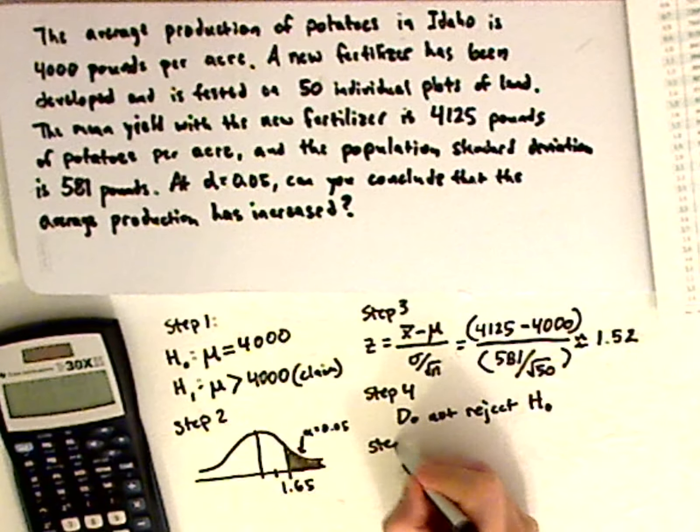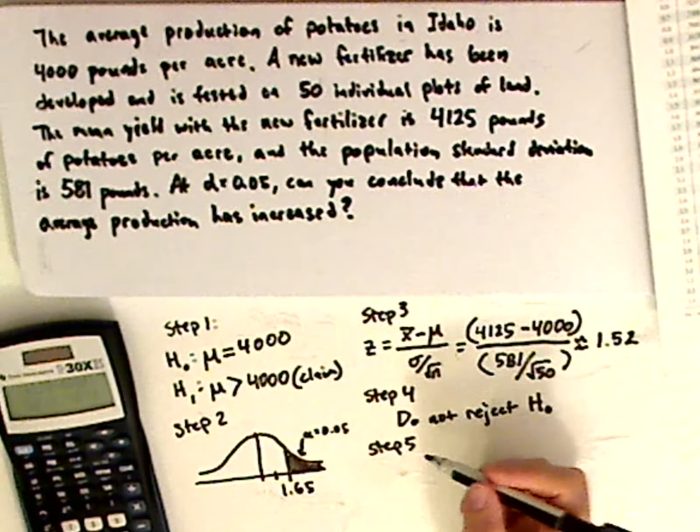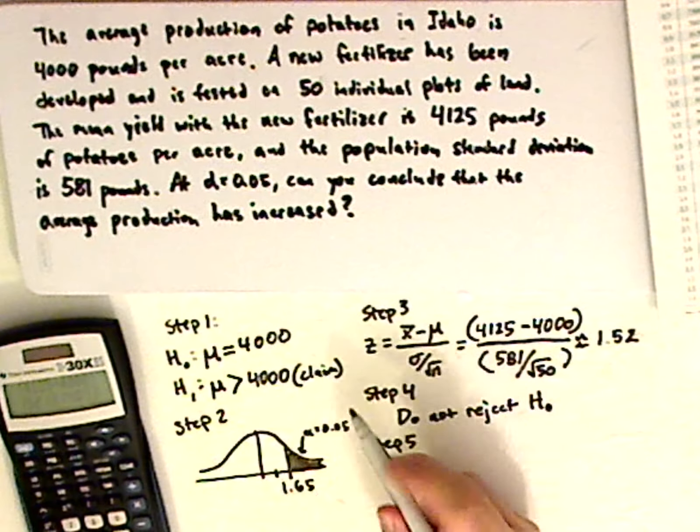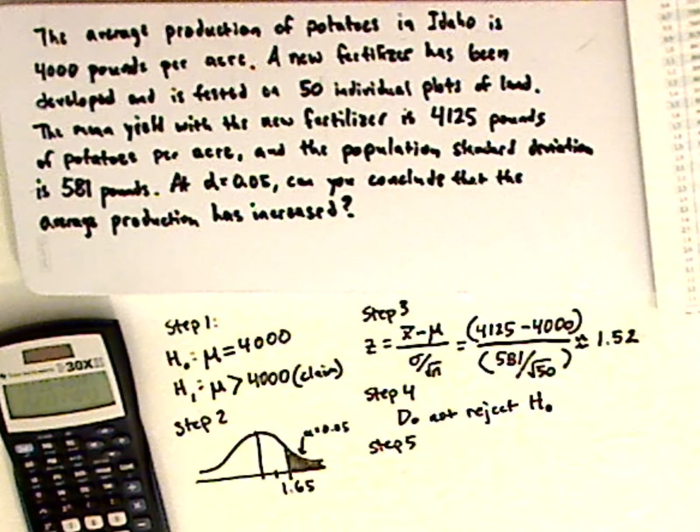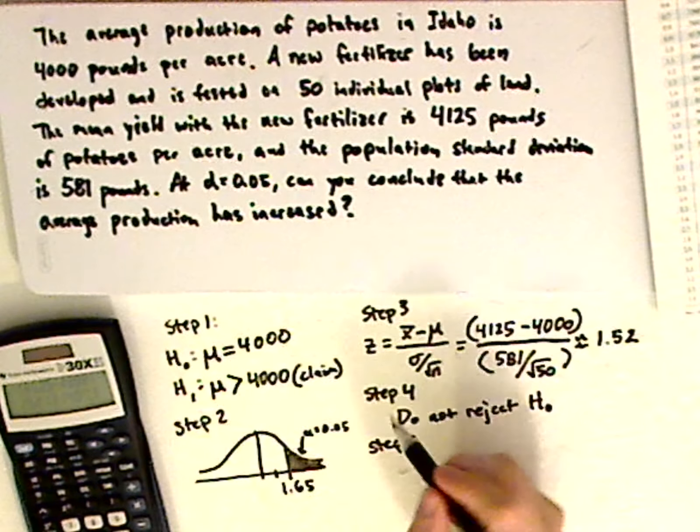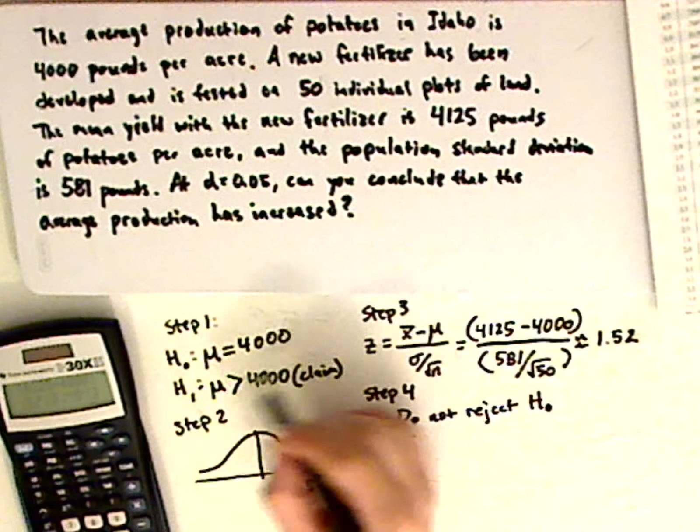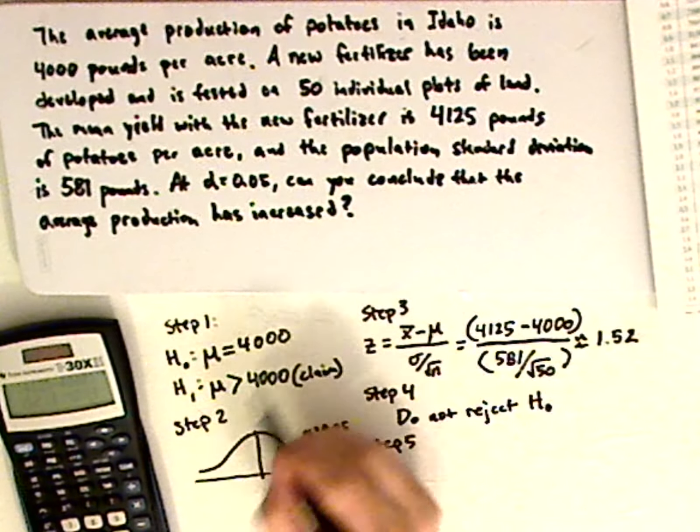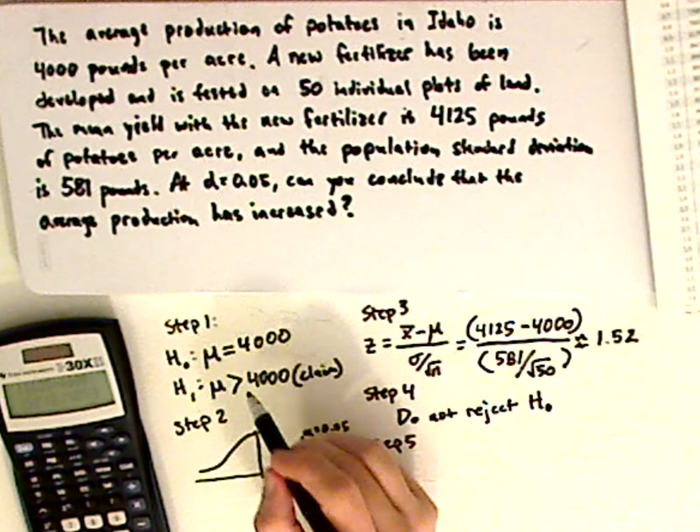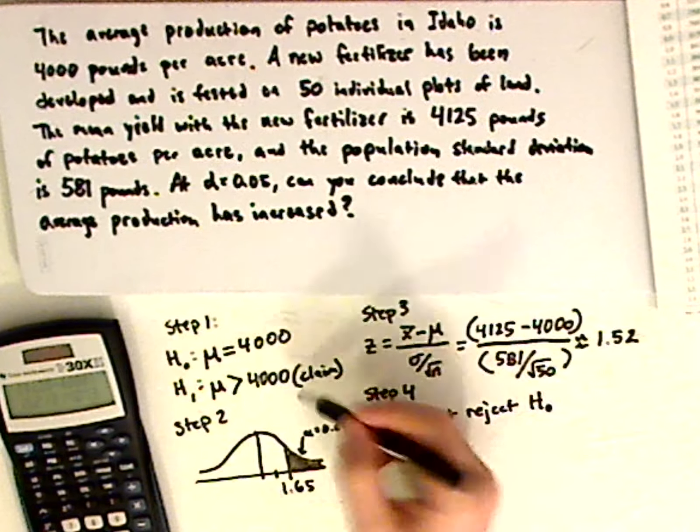Step number 5 is my conclusion. And your conclusion is based upon your decision, and then also it's based upon your claim. Now I'm not rejecting this, so that means I'm not accepting this. Which means I don't have enough evidence to support the claim.